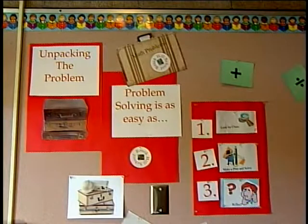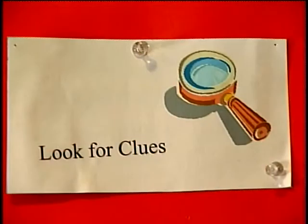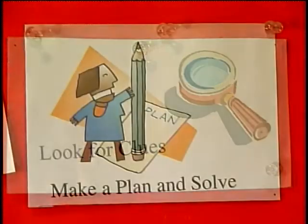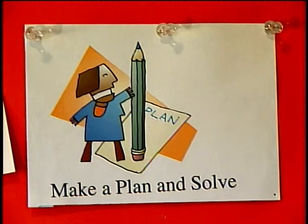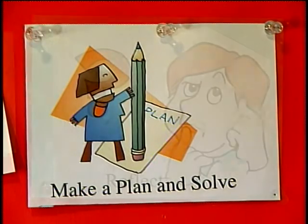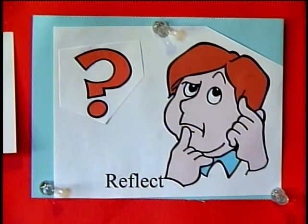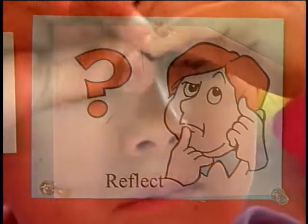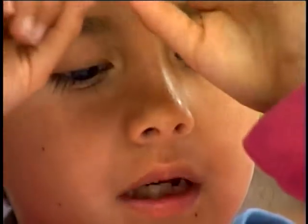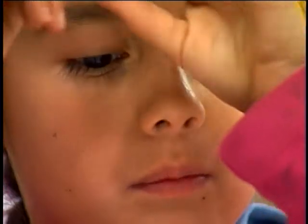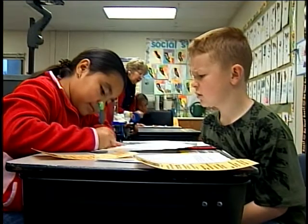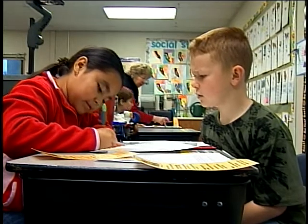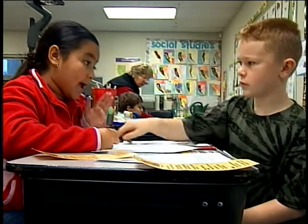There are three main steps. Looking for the facts. Looking for the clues, imagining your little magnifying glass and going through it. Then making a game plan — how are you going to solve it? And then a more recent development for us is going back and reflecting on whether or not their answer is probable, logical, and being able to discuss how they got their answer with their peers.